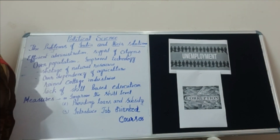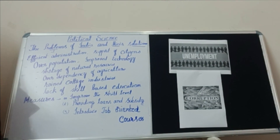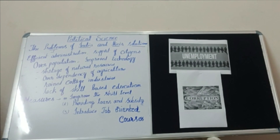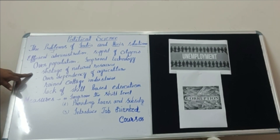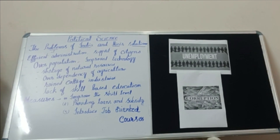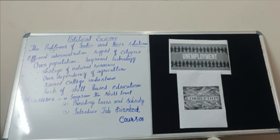If I go to ask a person what is the reason for unemployment, definitely you would say population. Yes, you are correct. In India, we face the problem of unemployment because of overpopulation and there is competition in getting employment. The second cause is improved technology. For example, the use of computers in offices has replaced workers, and the use of JCBs in construction and agricultural work has replaced many persons. So improved technology is also one of the causes for unemployment.